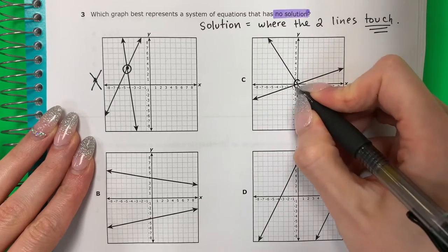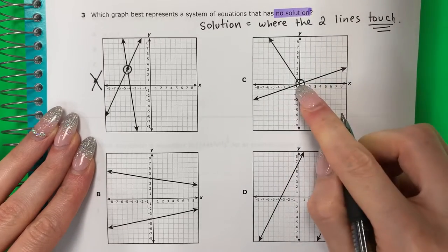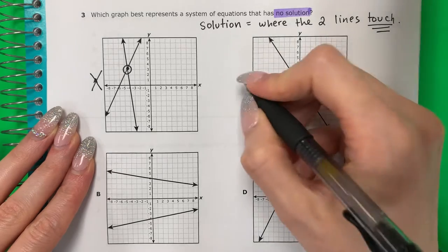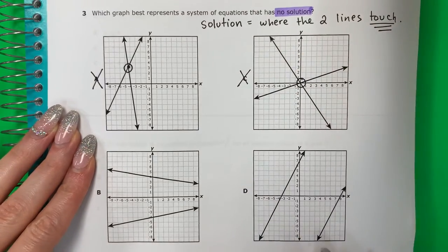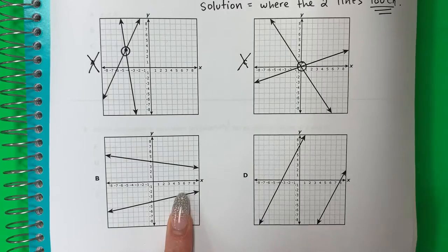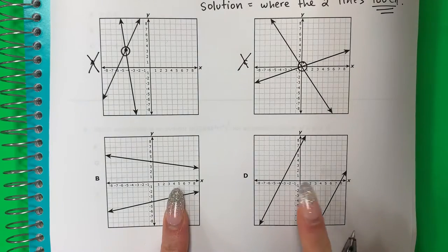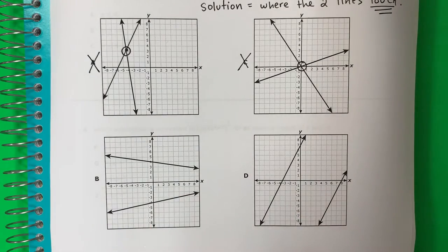This one, there is a solution. Hay una solución. It's where the two lines touch. Está donde las dos líneas se tocan. So this is not a solution. Now, here there's no touch. And here there's no touch. Aquí no hay toca y aquí no hay. So let me explain this a little more.